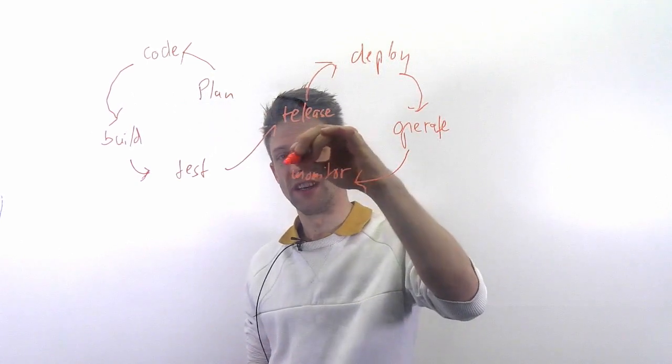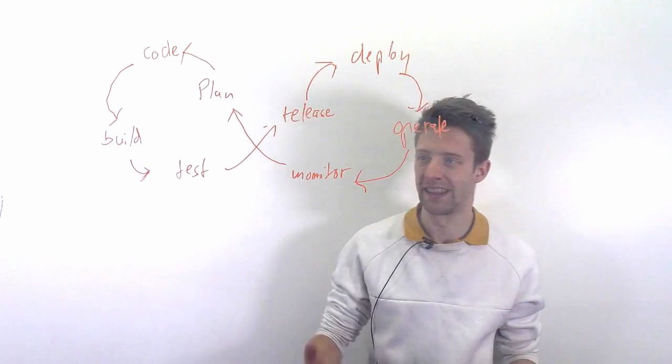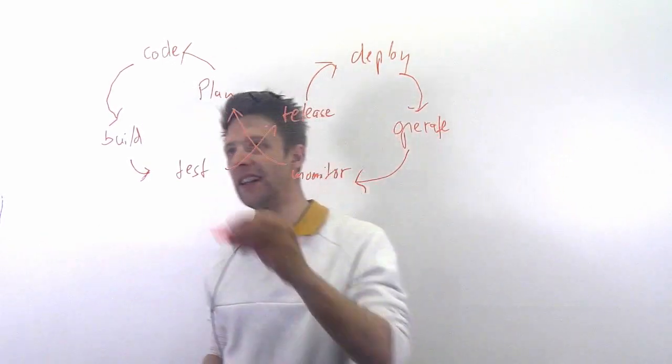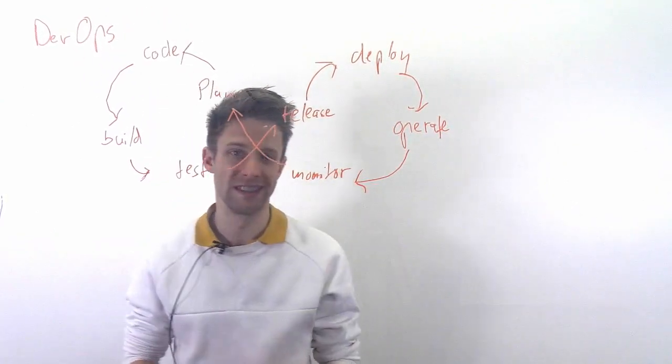And well, usually this leads to feedback. So you end up in the planning again. And what you see here, this eight or this continuous loop, this is a figure that is rather popular in the area of what is called DevOps.